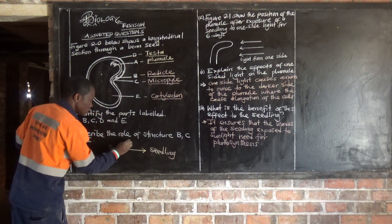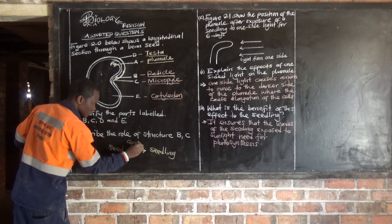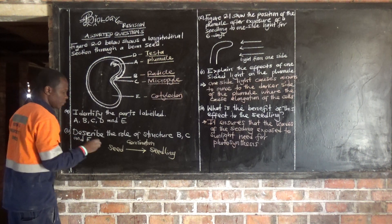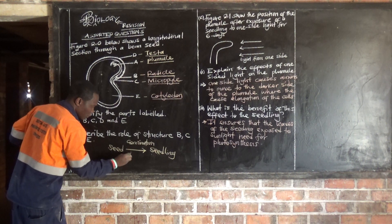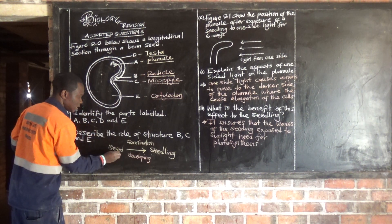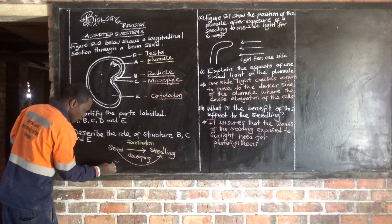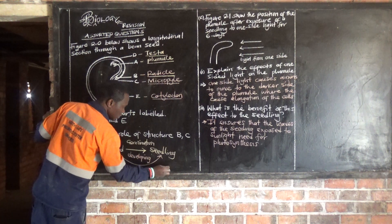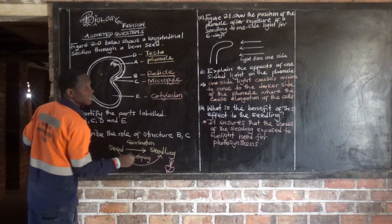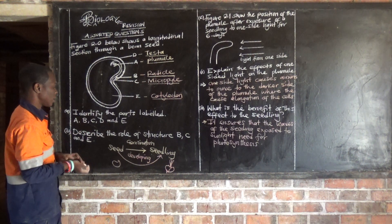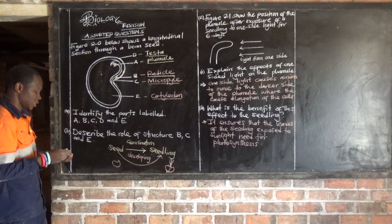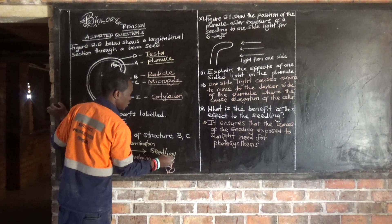This is what we call germination — the developing of a seed into a seedling. For germination to take place, there must be three major conditions which are necessary: these are oxygen, water, and favorable or optimum temperature.